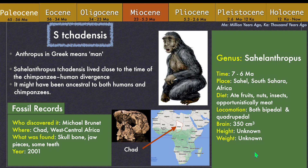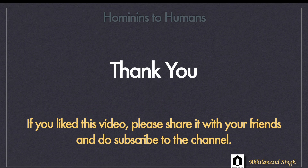So far, we have covered the evolution journey of about 3 million years, starting with Sahelanthropus chadensis and reaching up to Ardipithecus ramidus. We will cover the next 2 million years of history in the next part of the series, in which we will be talking about the genus Australopithecus. See you in the next video, friends. Bye.